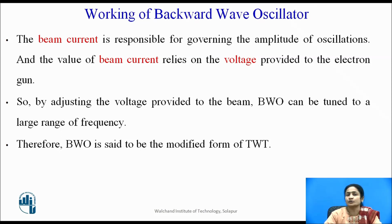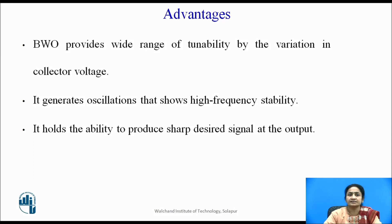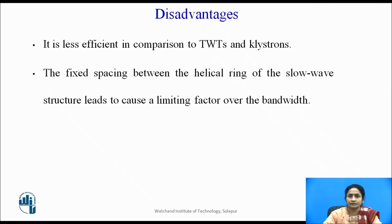Therefore, the backward wave oscillator is said to be a modified version of the TWT. Advantages: the backward wave oscillator provides a wide range of tunability by variation of the collector voltage. It also generates oscillations that show high frequency stability. It holds the ability to produce a sharp desired signal at the output. Disadvantage: compared to the TWT, it is less efficient and output is less. The fixed spacing between the helical rings and the slow wave structure leads to a limitation of the signal bandwidth.